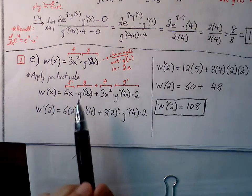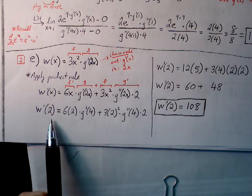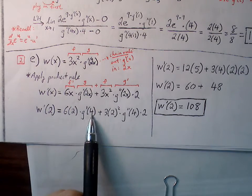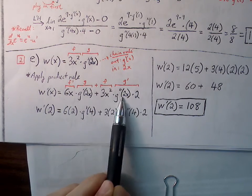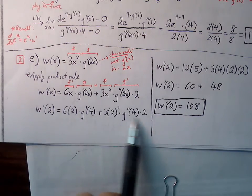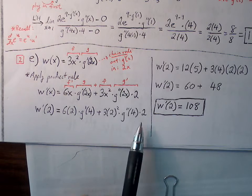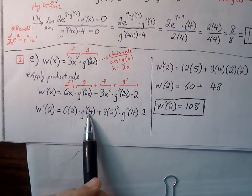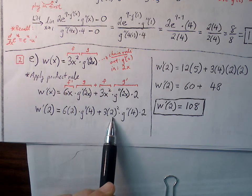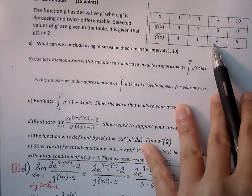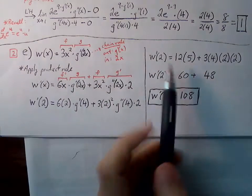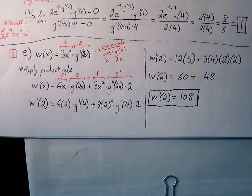Now that we have our derivative spelled out, we evaluate at x equals two. Replacing every x with two: six times two times G prime of four, plus three times four times G double prime of four times two. That gives twelve times G prime of four, plus twelve times G double prime of four. From our table: G prime of four is five and G double prime of four is two. So twelve times five is sixty, and twelve times four — wait, twelve times two is twenty-four, times two again gives forty-eight. Sixty plus forty-eight equals one hundred eight.